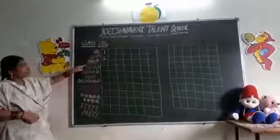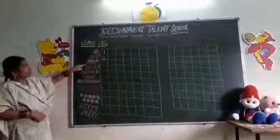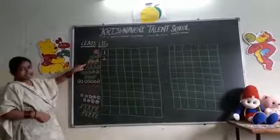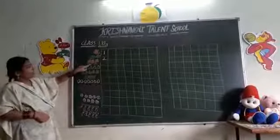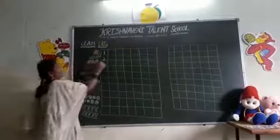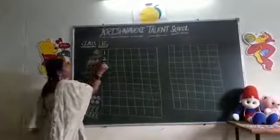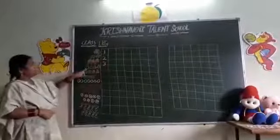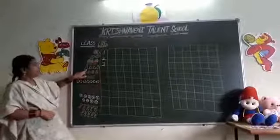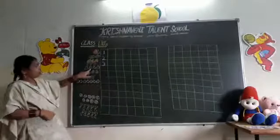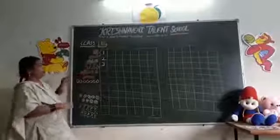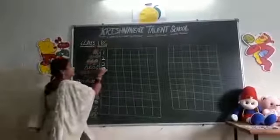Here, what is the picture? Which pictures are these? Ice creams. How many ice creams? 1, 2, 3. 3 ice creams. Here, which picture is this? Triangles. 1, 2, 3, 4. Write 4 here.